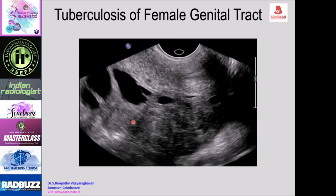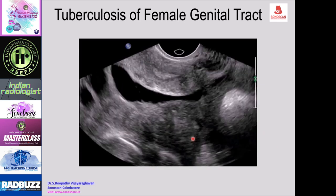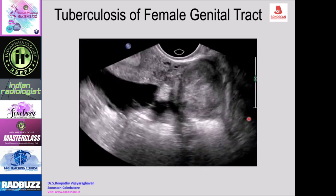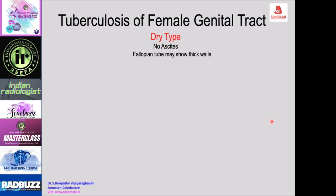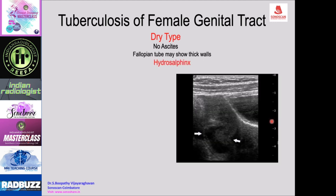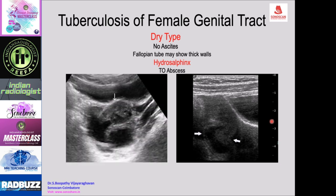On the left side, hydrosalpinx is present alongside the markedly thick-walled fallopian tube. In a young girl, abdominal scan shows hydrosalpinx with a thickened fallopian tube, a mass involving the hydrosalpinx and ovary, and peritoneal thickening, which can represent a tubo-ovarian mass or tubo-ovarian abscess.